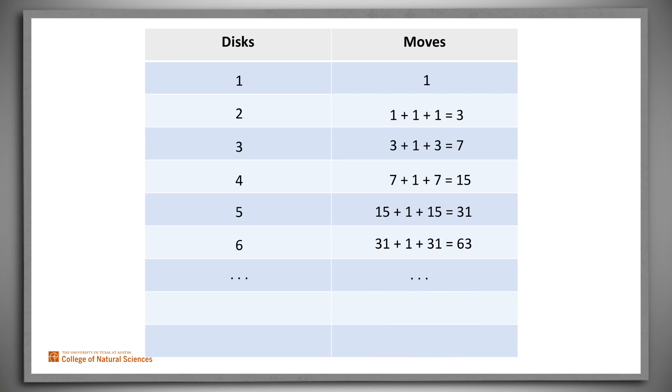Suppose that we want to move n disks. Call the number of moves required to move n minus 1 disks, m of n minus 1. Then we can describe the number of moves for n disks in terms of that. We move n minus 1 disks twice, plus one move for the biggest disk. We can call this m of n.